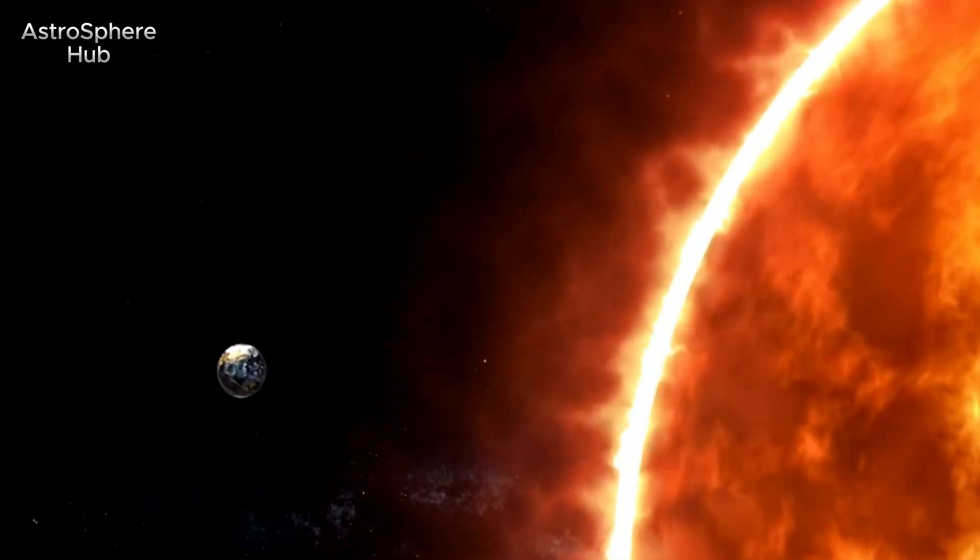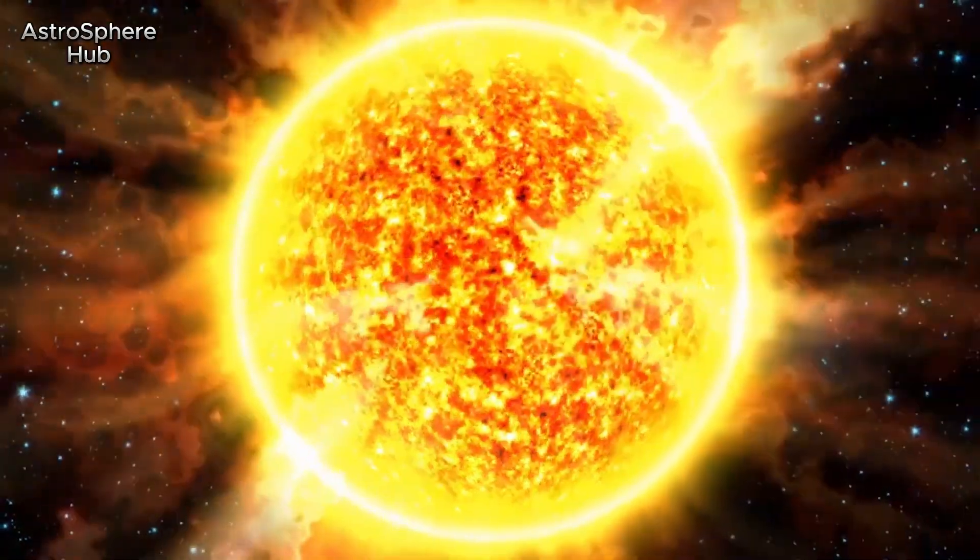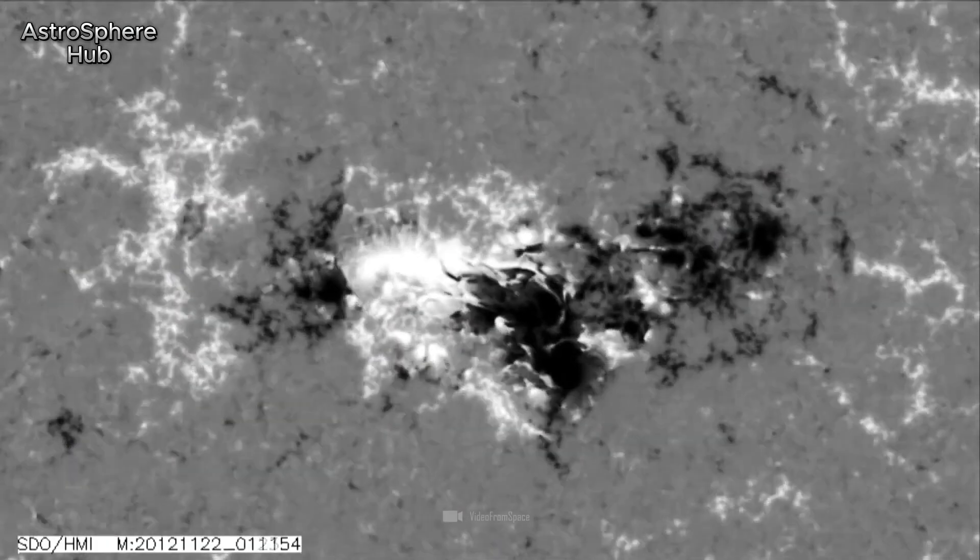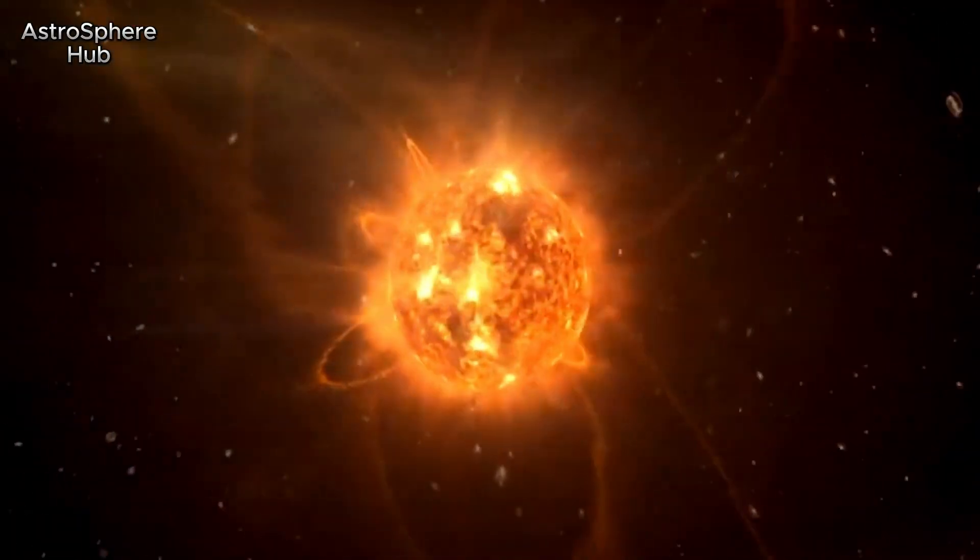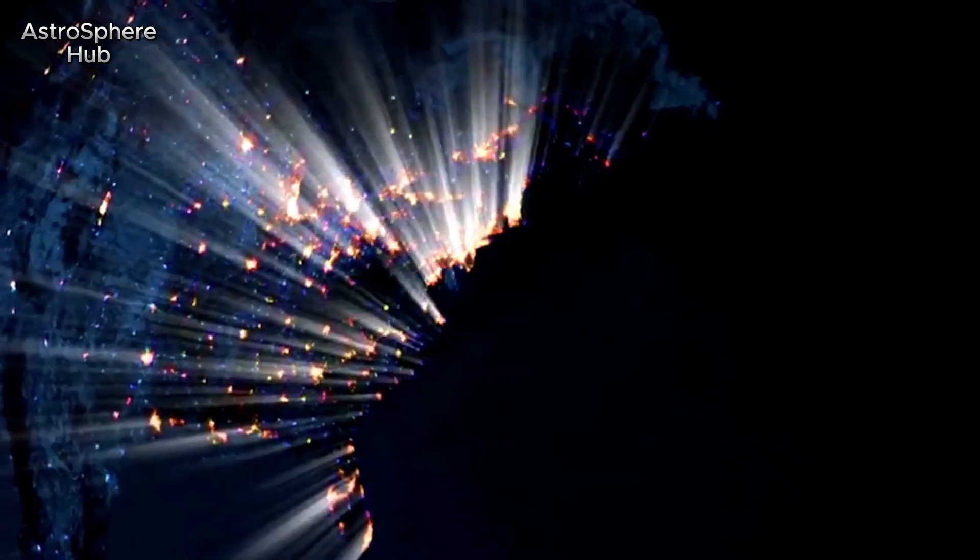Within these cycles, solar activity fluctuates from a minimum to a maximum and back again. Solar Cycle 25 began in 2019 and reaches its peak in 2025. For this reason, we must expect the size of AR 3664 to continue to increase and the danger to rise.